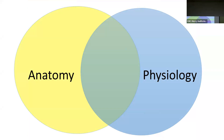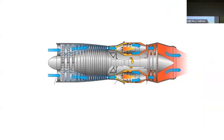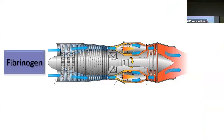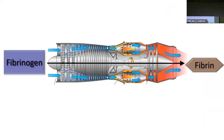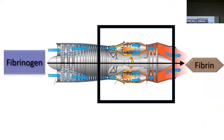This is an SR-71 engine for the Blackbird. While it looks very complex, it really serves a very simple purpose — and that's similar for the coagulation system. Just as a jet engine takes air to create thrust, the coagulation engine takes fibrinogen to make fibrin. Coagulation's primary purpose is to transform inactive fibrinogen into functional fibrin.